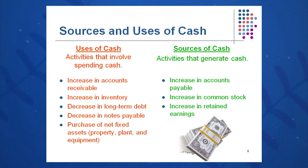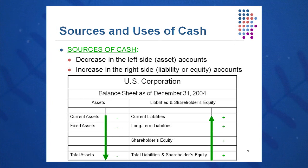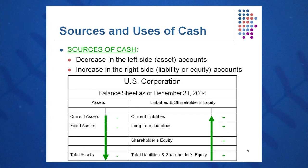In general, uses of cash are activities that involve spending cash, and sources of cash generate cash. A source of cash is a left-side balance sheet item going down, or a right-side balance sheet item going up. For instance, if current liabilities go up, that means I have bills that are unpaid — that's a source of cash. Conversely, if my inventory account goes down, that means I sold some inventory, and that's a source of cash. So left-side balance sheet item down, right-side balance sheet item up — those are sources of cash.